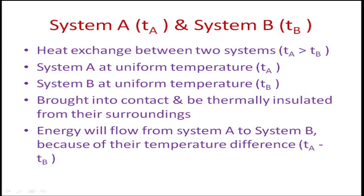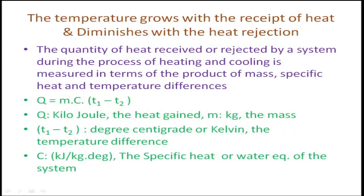If Ta is greater than Tb, heat will be transferred from system A to system B when they are brought into contact and thermally insulated from their surroundings. Energy will flow because of their temperature difference, which is Ta minus Tb. The rate of heat transfer or amount of heat transfer depends on various properties, and can be calculated using the equation Q = MCΔt.